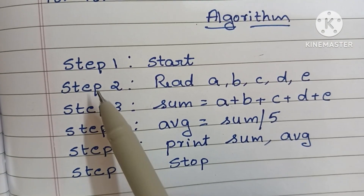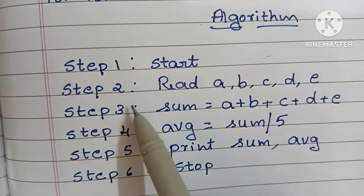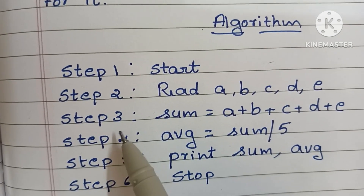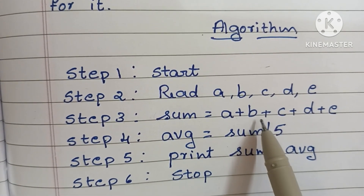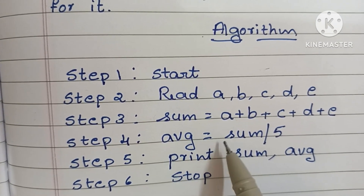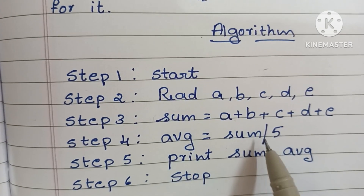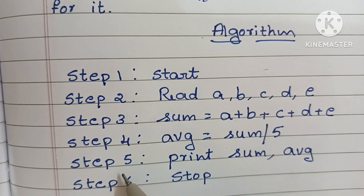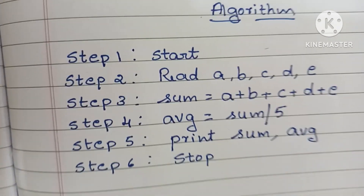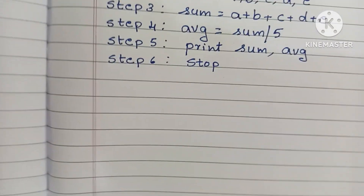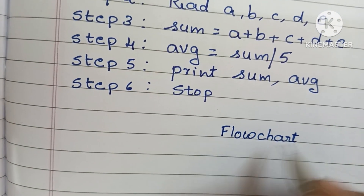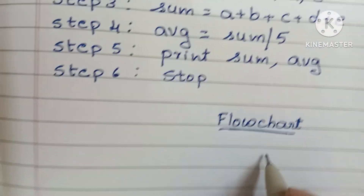To recap: step one is the start statement; step two, read five variables A, B, C, D, E; step three, calculate sum — sum is equal to A plus B plus C plus D plus E; step four, find average — avg is equal to sum divided by five; step five, print sum and average; step six, stop the algorithm using the stop statement. Next, the flowchart.